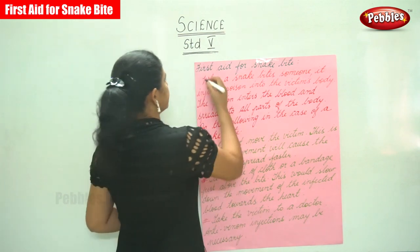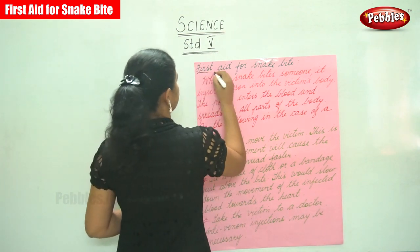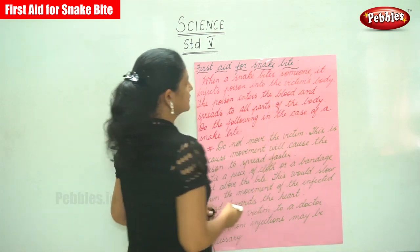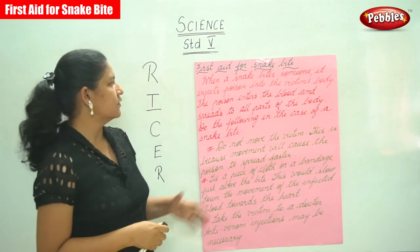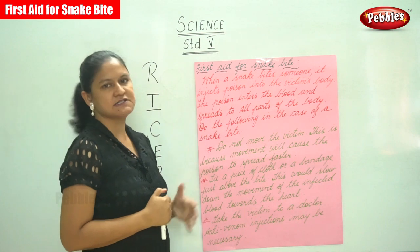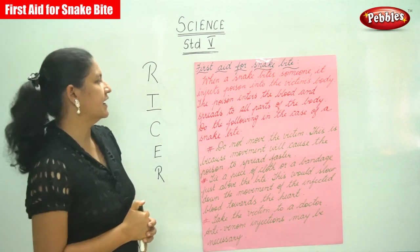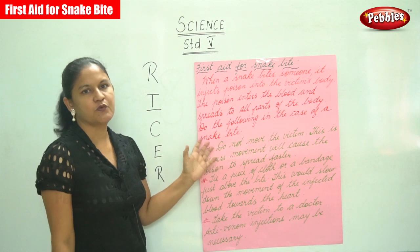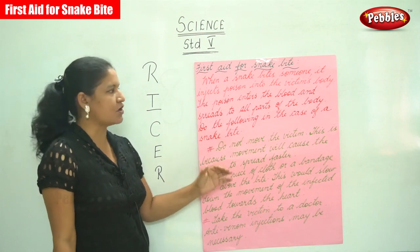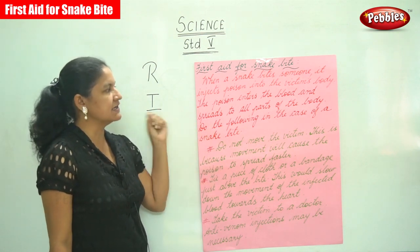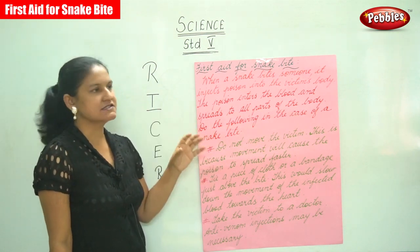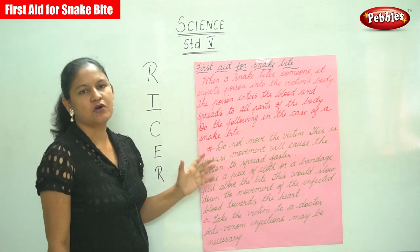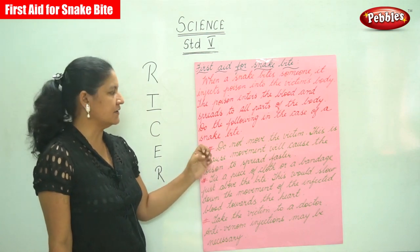The next topic is first aid for snake bite. When a snake bites someone, it injects poison into the victim's body. The poison enters the blood and spreads to all parts of the body.